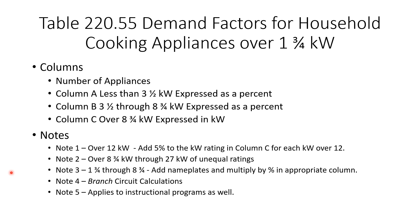The table has four columns. The first is the number of appliances. Column A covers appliances that are over one and three-quarters and less than three and a half kilowatts, expressed as a percent. This is important because not all columns are expressed as a percent, which can make it very confusing.